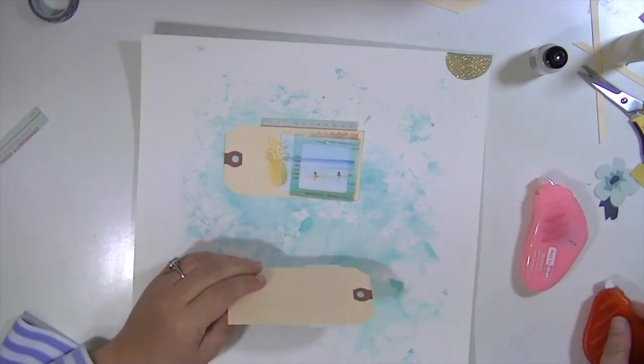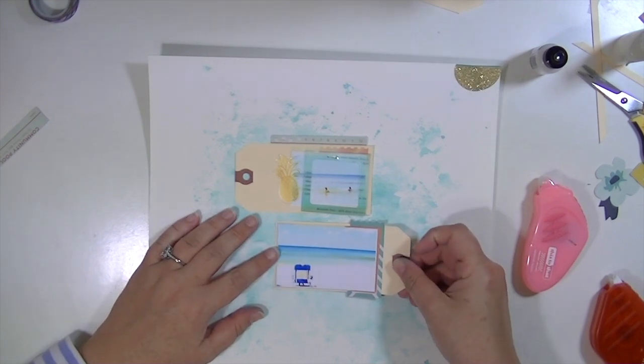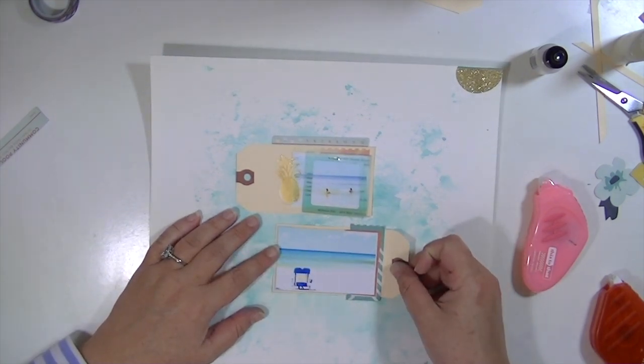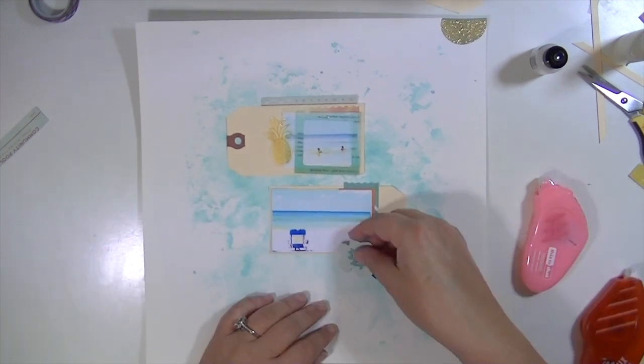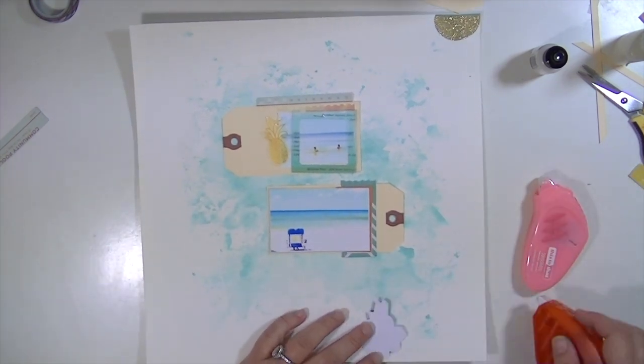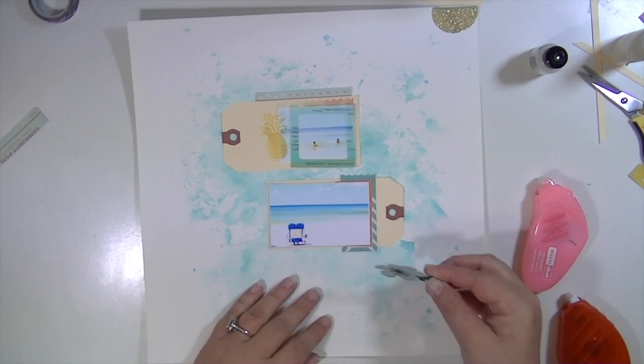I decided that I wanted that gold glittery half circle with a little bit of teal on it, so I just sacrificed it. At least it got onto a project instead of just sitting in the packaging forever because I wouldn't have been able to use it.